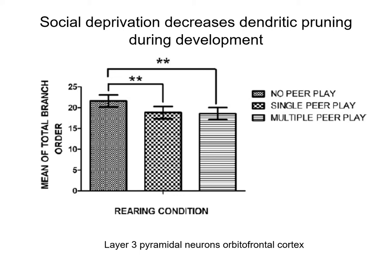This is similar to what we see in sensory enrichment and deprivation literature. In this study, they looked at whether social deprivation has an impact on dendritic pruning. Their hypothesis was that if animals are not going through social stimulation — not engaging in peer play — then the normal refinement of the dendritic field that a rat would go through would be stunted.